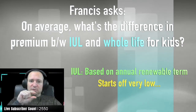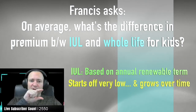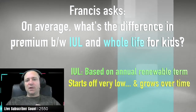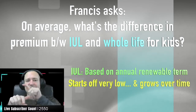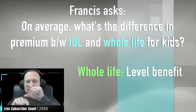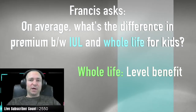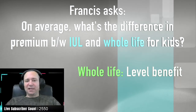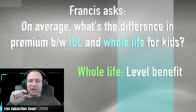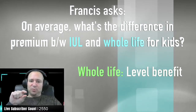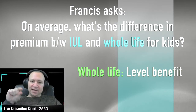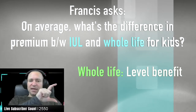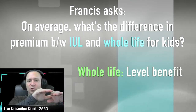The annual renewable term cost grows over time with a hyperbolic curve — it goes up and up and then as you get older it really accelerates. Whole life, on the other hand, has a level death benefit. To determine that level cost, they take your assumed age, anticipated mortality rate based on your demographics, model how annual renewable term would grow until age 80, and then average that amount across the whole policy period.